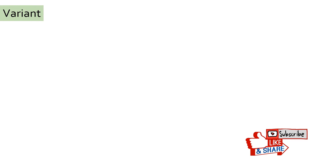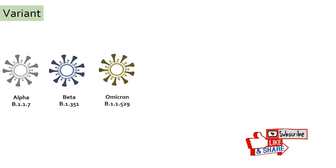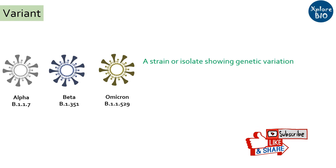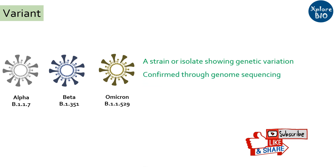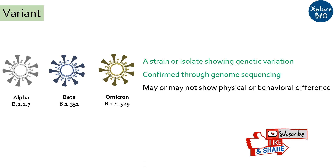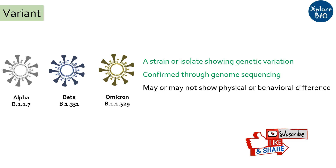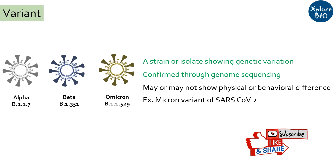Coming on to variant. When a particular isolate or strain shows genetic variation or mutation which is confirmed through genome sequencing, it is termed as a variant. Unlike a strain, a variant may or may not show a physical or behavioral difference, but it is surely genetic — for example, the Omicron variant of SARS-CoV-2 virus.